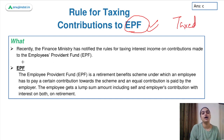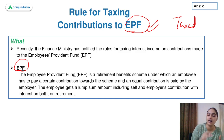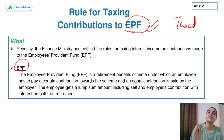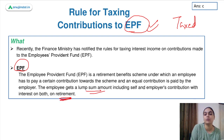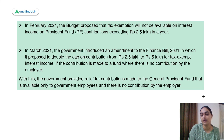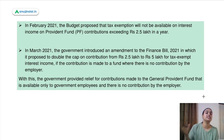The Finance Ministry has recently notified these new rules as to how the interest income earned on the Employee Provident Fund will be taxed. EPF stands for Employee Provident Fund — it is a retirement benefit scheme. Both you as well as your employer contribute a certain amount and you get that lump sum amount at your retirement along with the interest. This will help you secure your retirement and act as a source of income during retirement.